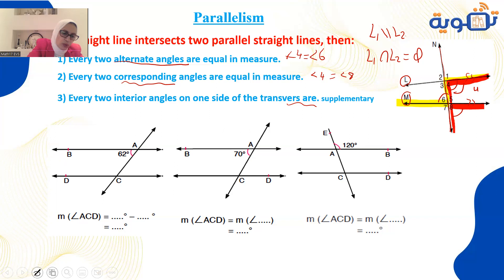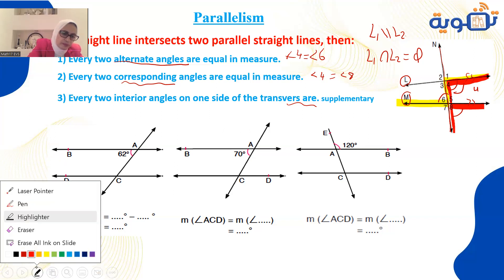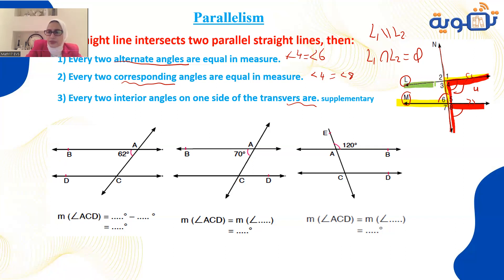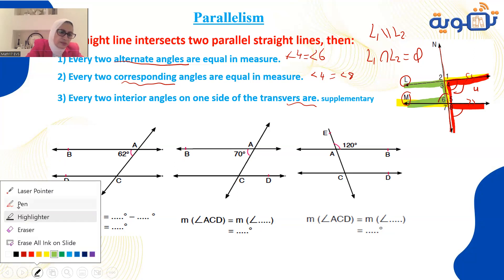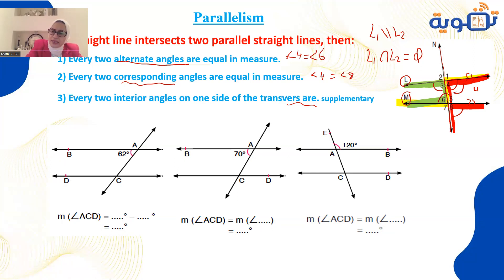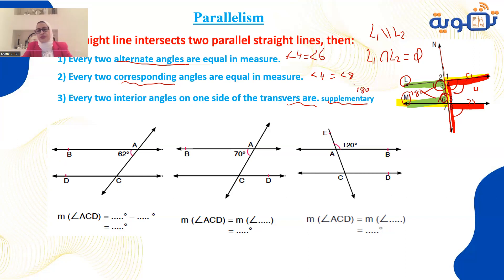Letter U or letter C: from inside, angle 3 and angle 6 together give 180 degrees because they are interior angles — supplementary angles. The sum equals 180.